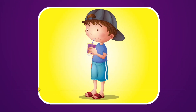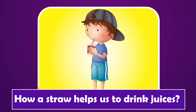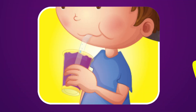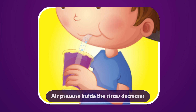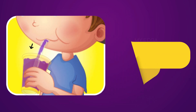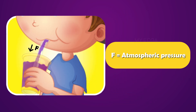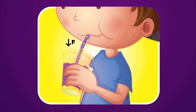Can you tell me how a straw helps us to drink juices? When we suck the juice through the straw, the air pressure inside the straw decreases. But the air pressure on the surface of the liquid is equal to atmospheric pressure. This pressure on the liquid's surface pushes the liquid upward through the straw to the mouth. Thus, we can drink the juice.